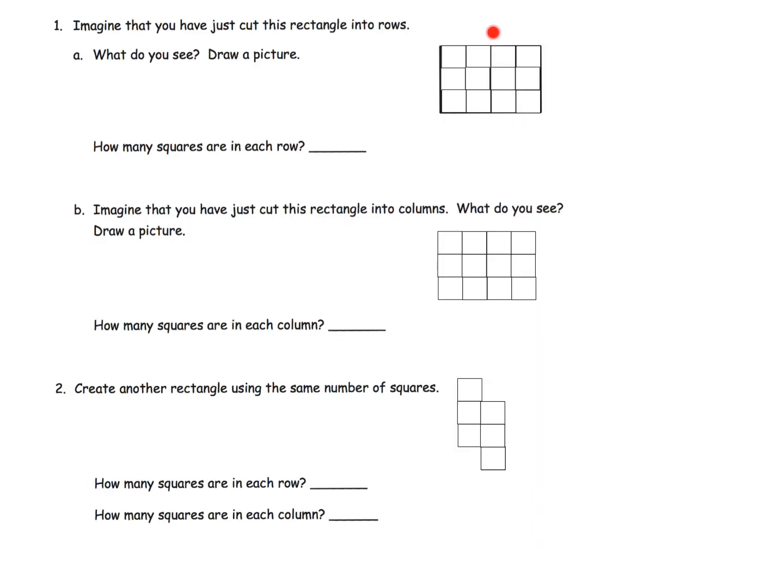We've got this rectangle here, and we're being asked to imagine that we cut it into its rows. What would we see if we cut this into its rows? We're going to see something that looks a little bit like this. So we want to see three strips of four. That's our three rows of four. So how many squares are in each row? We want students to be able to visualize, the answer is four.